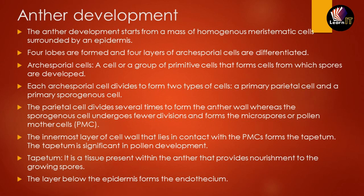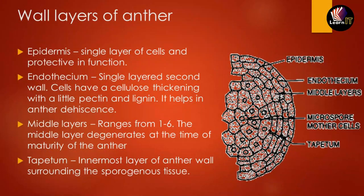Now let us look at the functions of the different layers of the anther. First, the epidermis is made up of a single layer of cells and helps in protection of the spores. Second, the endothecium has cellulose thickening with pectin and lignin, which gives it stability and helps in anther dehiscence — the breaking open of the anther so that pollen grains can be released into the atmosphere.